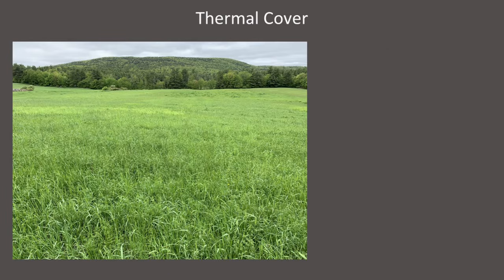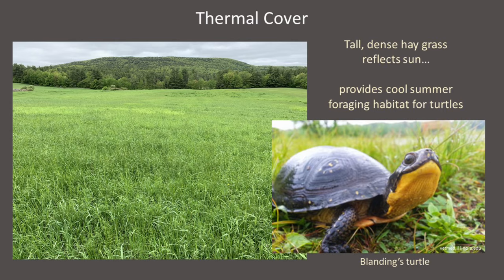Very important thermal cover may be provided by features that are less obvious than fallen logs. For example, many turtles — including painted and snapping turtles, as well as less common Blanding's, spotted, and wood turtles — may be attracted to tall grass hay fields during the hottest portions of summer. These tall grasses reflect a large amount of sunlight off their tops, so the ground beneath is often very cool, providing turtles with a refuge from summer heat and a great spot to forage on herbaceous vegetation. As habitat managers, we might delay mowing fields until late fall or raise the mower decks high to minimize the chances of hitting turtles.